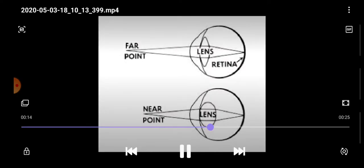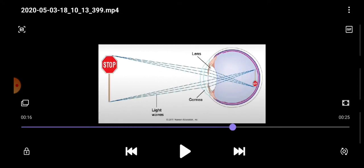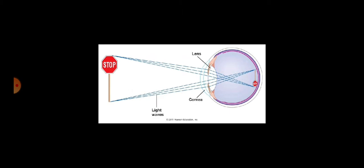Students, don't forget the image is formed inverted on the retina. This inverted image is carried by the optic nerve to the brain, and our brain corrects the position of the image, interprets it, and tells us what it is.